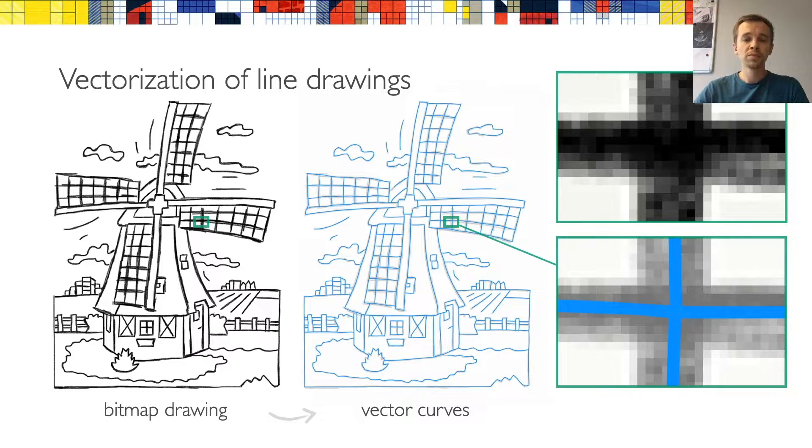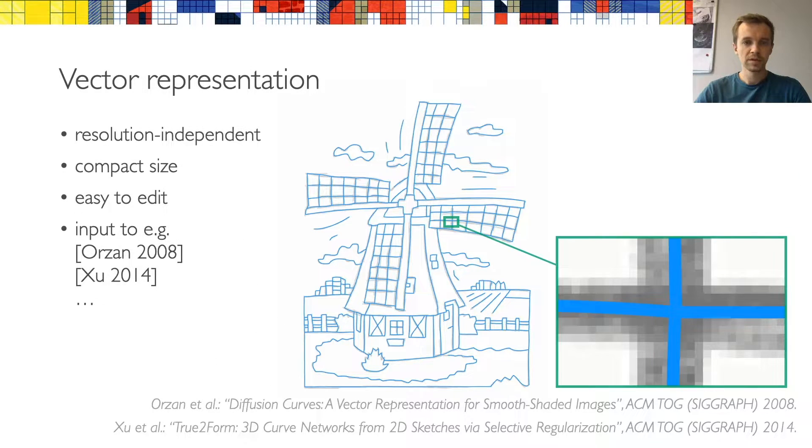In this work we look at the problem of vectorization of line drawings. Given a bitmap line drawing, such as the one on the left, we want to convert it into a set of parametric curves on the right. This kind of vector representation is often more convenient than a bitmap, because it is resolution independent and more compact in terms of size. It also facilitates editing operations. Moreover, vector curves can be used as an input to a variety of sketch processing algorithms, for instance for colorization or sketch-based modeling.